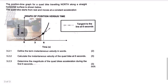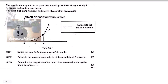Now a separate question from the same paper. The position-time graph for a quad bike traveling north along a straight horizontal surface is shown. The quad bike starts from rest and moves at constant acceleration. Question 3.2.1: Define instantaneous velocity. Instantaneous velocity is the rate of change in position. Question 3.2.2: Calculate the instantaneous velocity of the quad bike at 6 seconds.